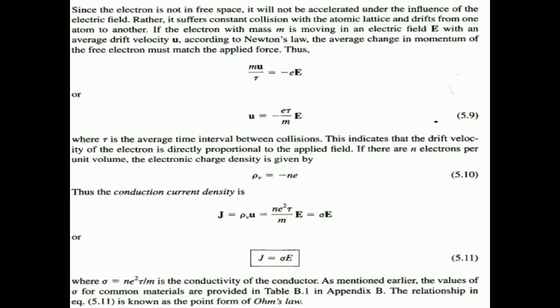In the filament, the volume charge density is -ne, where n is the number of electrons per unit volume and e is the electron charge (the minus sign accounts for electrons being negative). The conduction current density J = ρv·u. Substituting the values of ρ and u gives J = (ne²τ/m)·E. This part — ne²τ/m — can be written as sigma (σ), the conductivity of the conductor. So the conduction current density is J = σE.